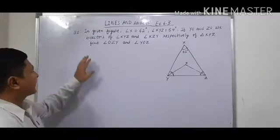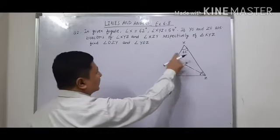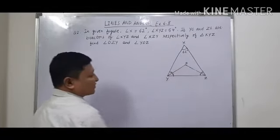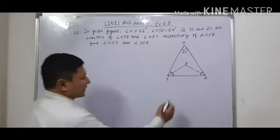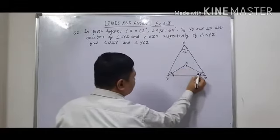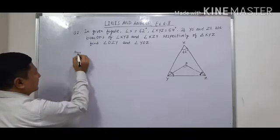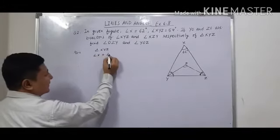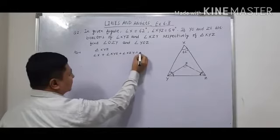Now let us solve the second question of exercise 6.3. In the given figure, angle X is equal to 62 degrees, angle XYZ is equal to 54 degrees, and YO and ZO are the bisectors of angles XYZ and XZY respectively. We have to find angle OZY and angle YOZ. First, we take triangle XYZ, and angle X plus angle XYZ plus angle XZY is equal to 180 degrees.